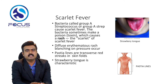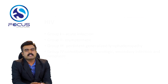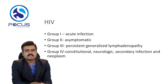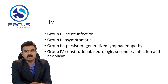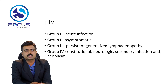The next one is HIV. In HIV it is classified into four groups: Group 1 is acute infection, Group 2 is asymptomatic, Group 3 is persistent generalized lymphadenopathy, and Group 4 includes constitutional symptoms, neurologic involvement, secondary infections, and neoplasia.